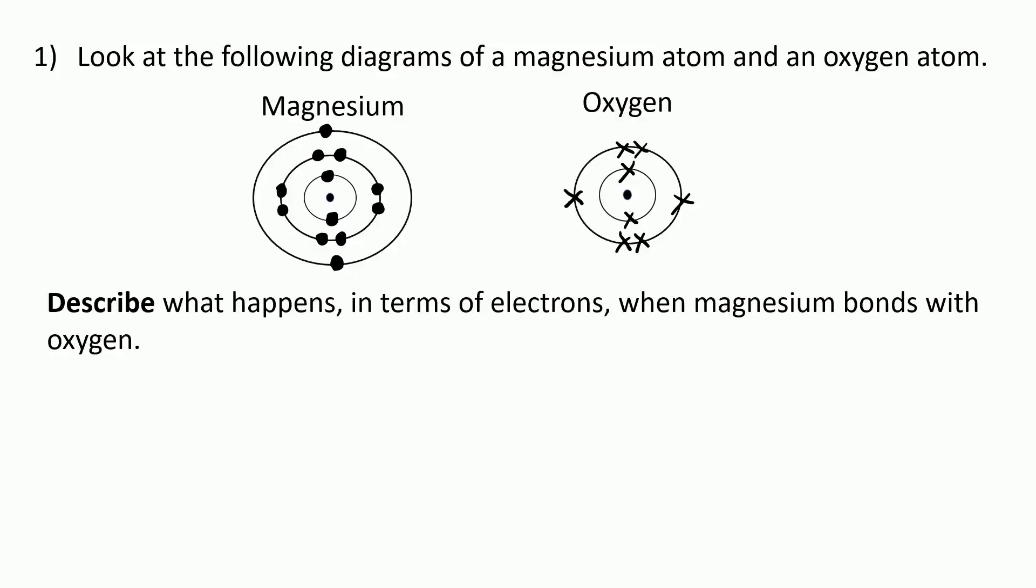This is a typical ionic bonding question. Look at the following diagrams of a magnesium atom and an oxygen atom. Describe what happens in terms of electrons when magnesium bonds with oxygen.